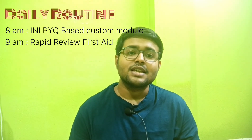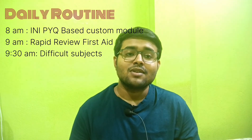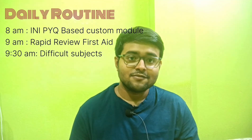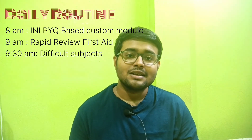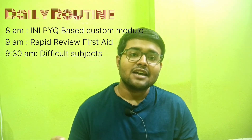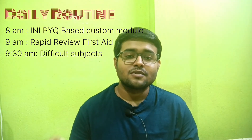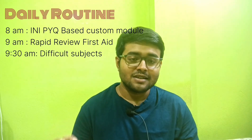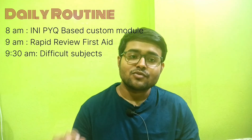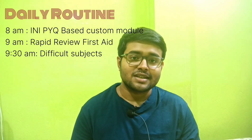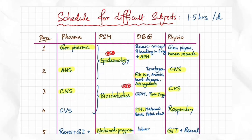The next one-and-a-half hours are golden — use them for your toughest subjects, the ones you usually avoid. For me it was Pharma, PSM, and Physio. I finished them in a 10-day cycle. I've made a sample schedule for four subjects — Pharma, PSM, Pathology, and OBG — and you can swap them based on your own strengths. I've allocated one-and-a-half hours each day.